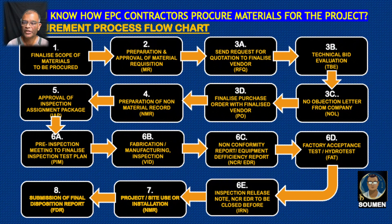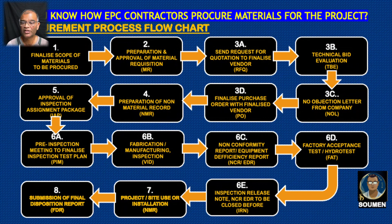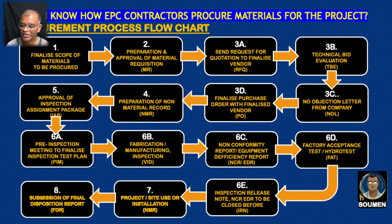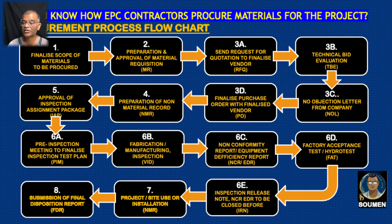After IAP approval, the pre-inspection meeting is arranged. Participants include the vendor, the inspection department from the company (VID), and the contractor representative. In the pre-inspection meeting, the Inspection Test Plan (ITP) is finalized. Once the ITP is ready, the vendor starts procuring their raw materials to fabricate or manufacture the equipment. During manufacturing, vendor inspectors from the contractor and the VID representative are present periodically, based on the level and restrictions of the inspection.